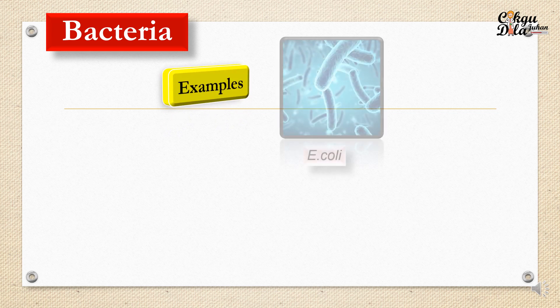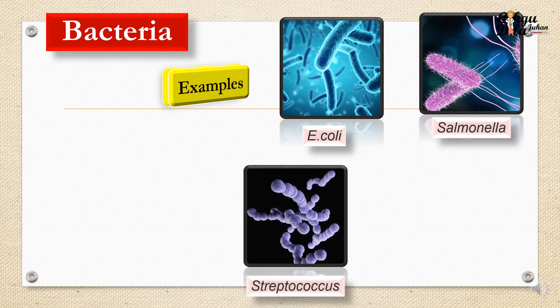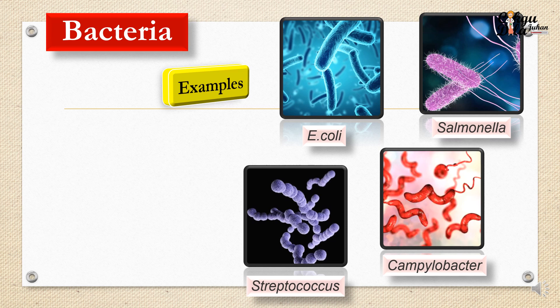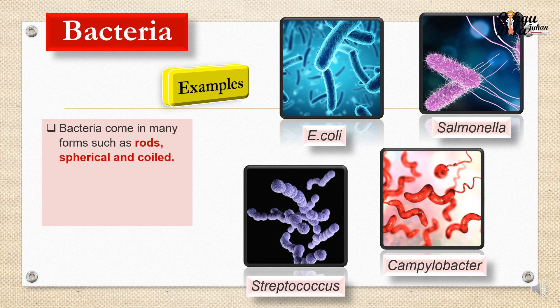Next, we have bacteria. Here are some examples of bacteria: E. coli, Salmonella, Streptococcus, and Campylobacter. These are the most common bacteria around us — there are many more that you can search yourself. You commonly hear about these bacteria in advertisements like Lifebuoy. Bacteria can come in many forms, such as rod, spiral, and coil shapes. As you can see from this diagram, bacteria are also available in a variety of sizes and colors.